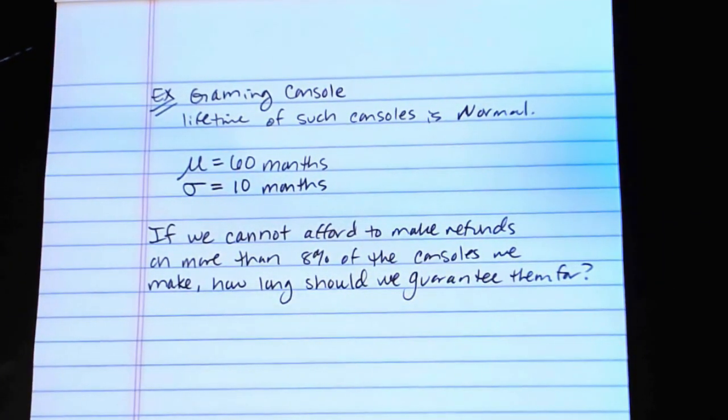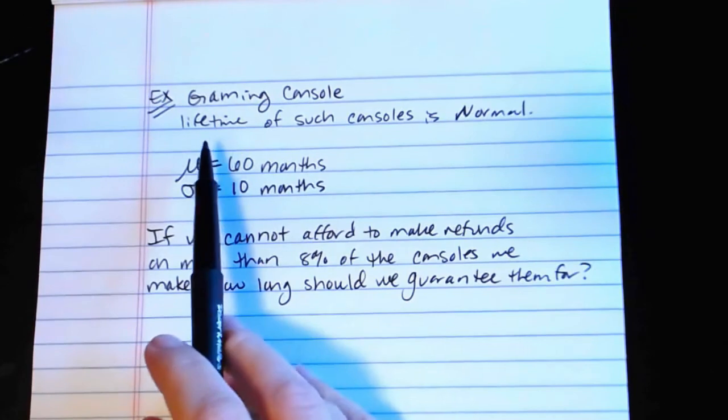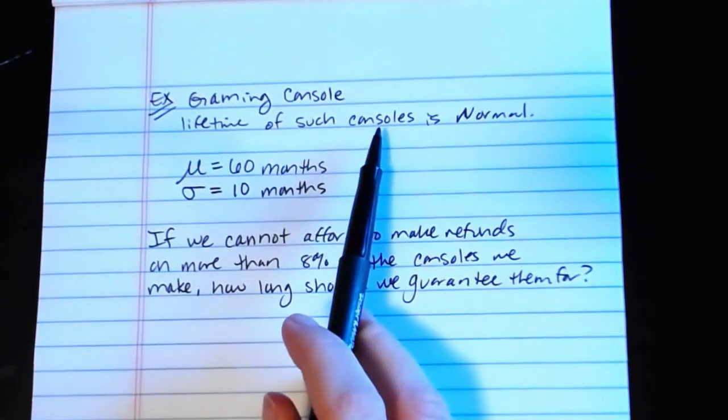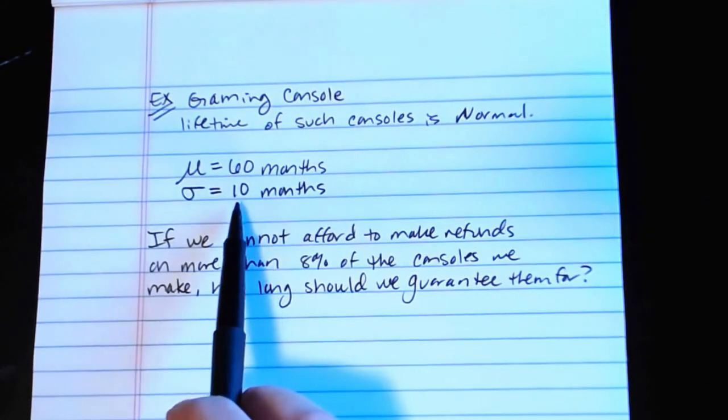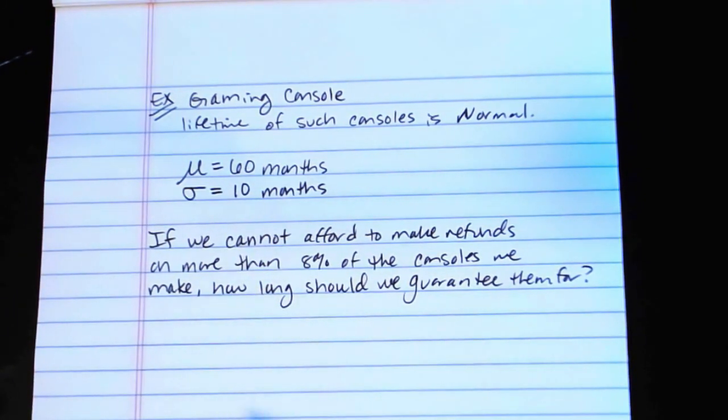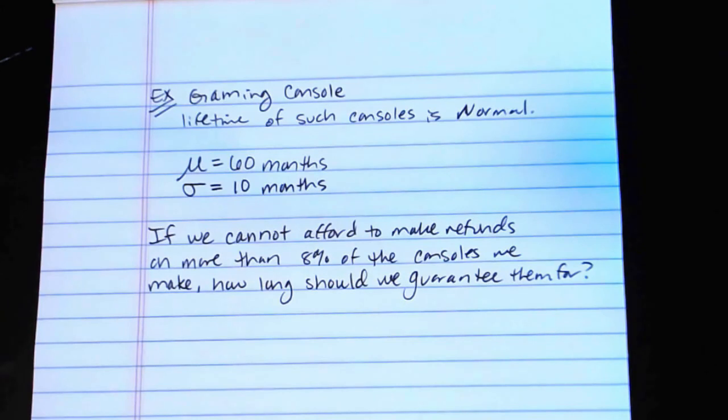Let's say that what we're trying to figure out is if we cannot afford to make refunds on more than eight percent of the consoles we make, how long should we guarantee them for? We've got this gaming console that we make, something like an Xbox or a Wii. We know that the lifetime is normally distributed, with a mean of 60 months and a standard deviation of 10 months.